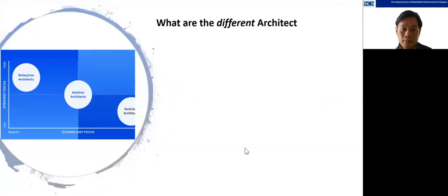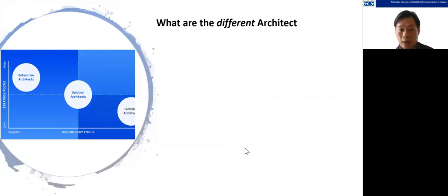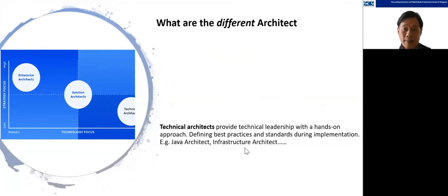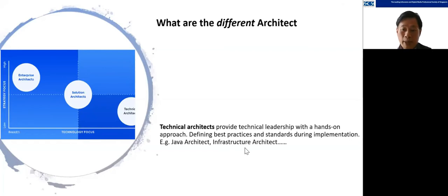I'm going to talk about the different types of architects in the market so people can appreciate the difference. Firstly, there's the technical architect — your typical Java architect or infrastructure architect, who does hands-on designing and solutioning, defining best practices and standards across implementation. These are very traditional technical architects who specialize in their own domain.